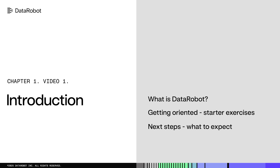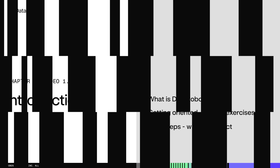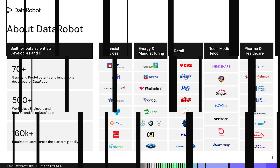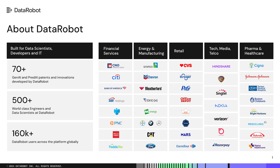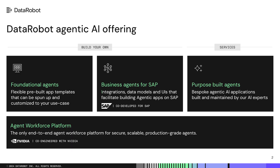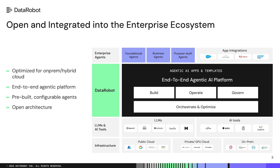We'll cover things like time series modeling, predictive modeling, and of course agentic and generative-based applications. So, what is DataRobot? The DataRobot agentic AI platform seamlessly integrates the full life cycle of AI agents across a wide range of deployment environments, including on-prem and private GPU clouds, sovereign GPU clouds, and major public cloud platforms.